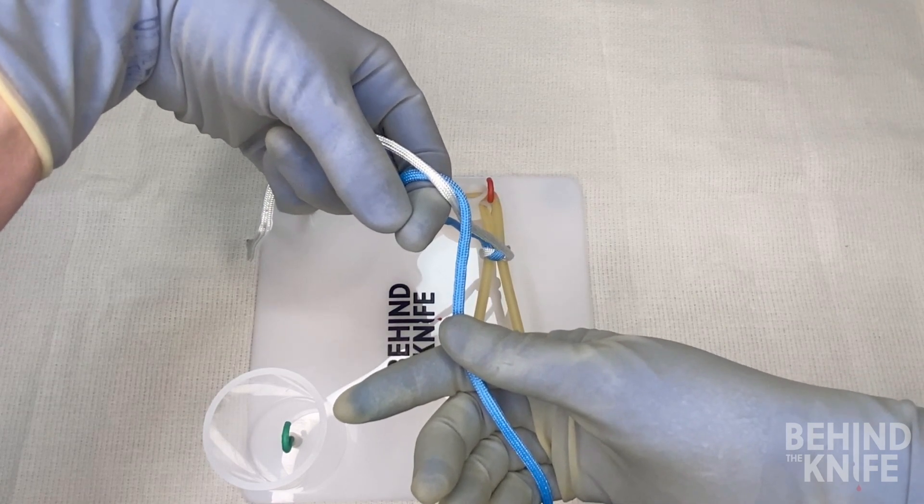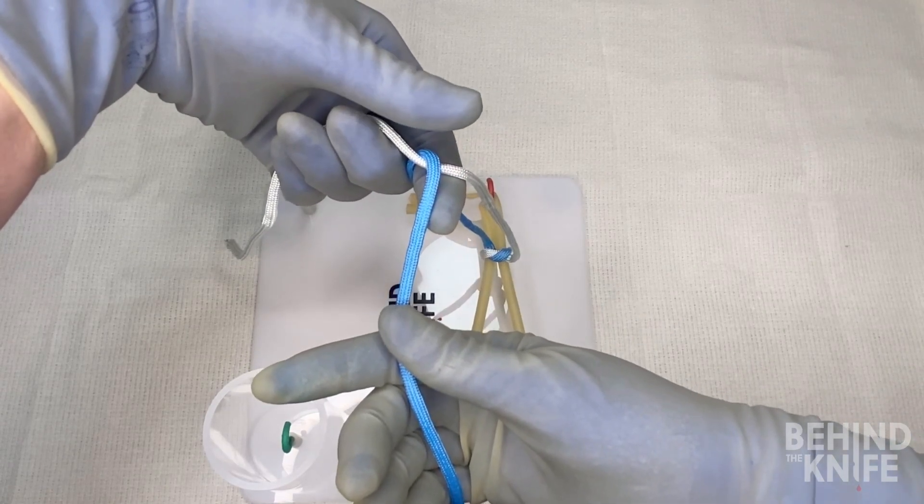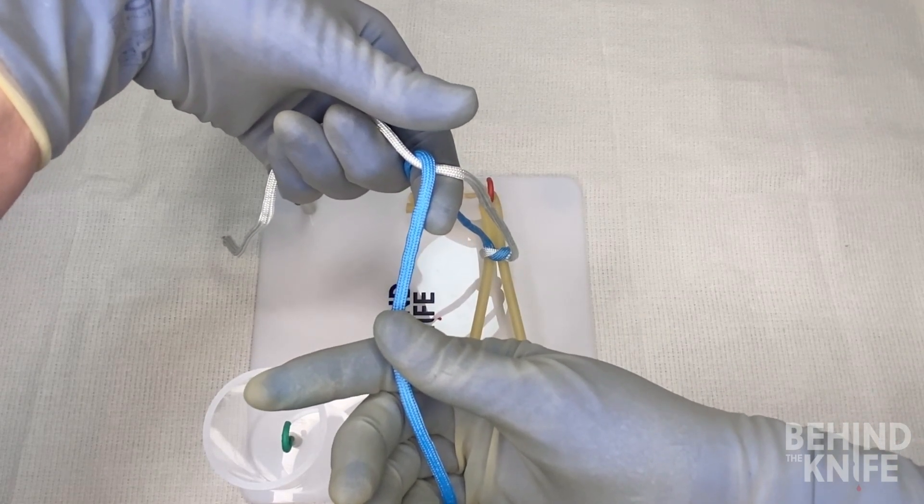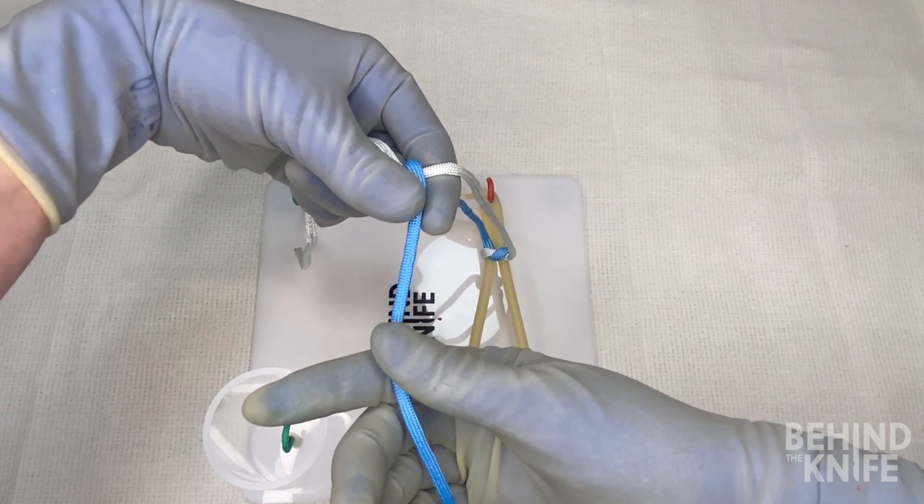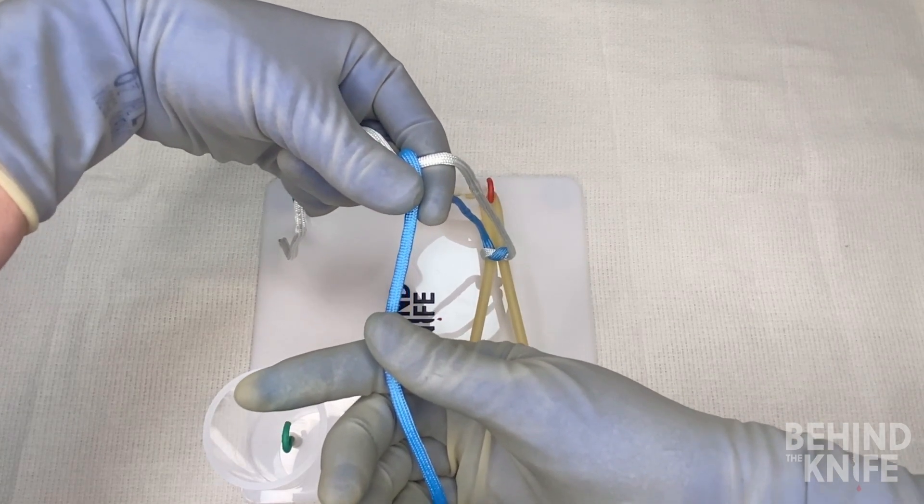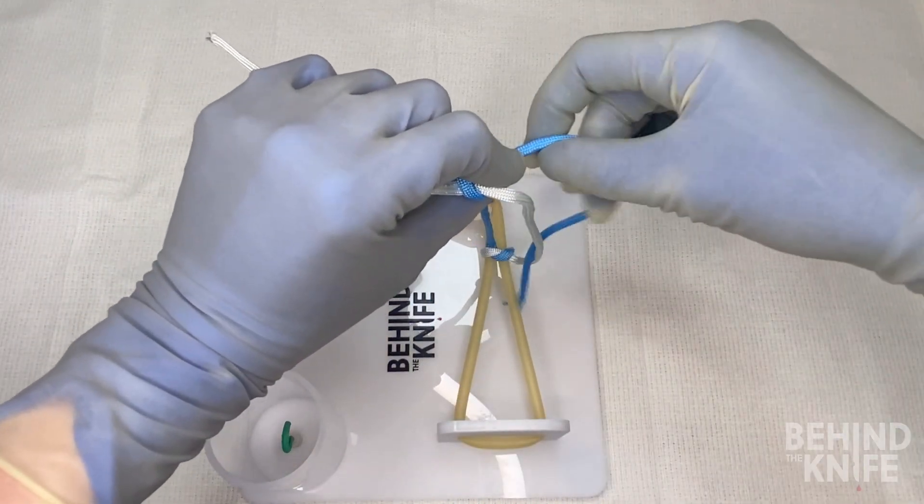We'll take the blue end of the string that's in our right hand, and we'll place it over top our index finger, and we'll re-pinch our thumb and our index finger, this time with the blue string in between, and rotate our hands back through, bringing the blue end of the string with us.